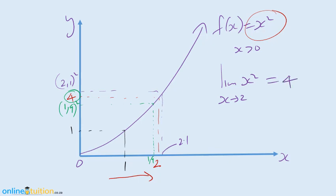This is very important. In the definition of the limit — the limit of f of x, which is the function, as x approaches a, which is in our case 2 — that's equal to l, where l is 4, the y value, the output. The function doesn't have to be evaluated at x equal to 2. We said as x approaches 2, not x equals 2.